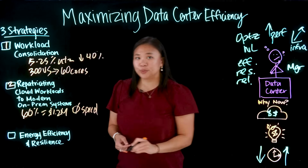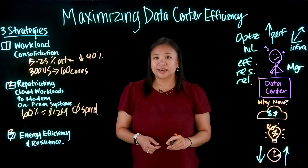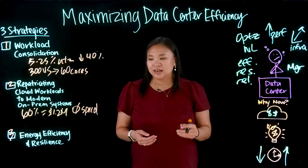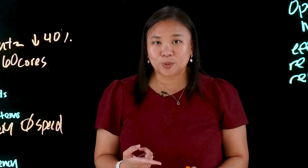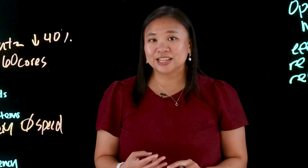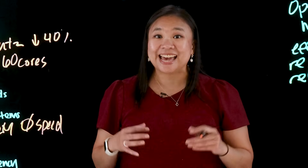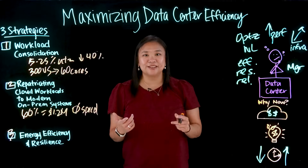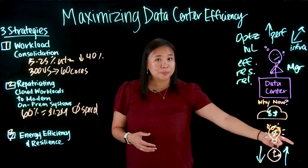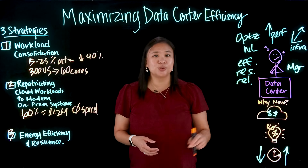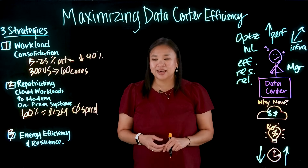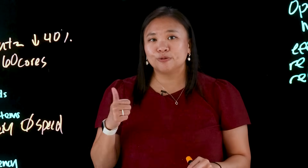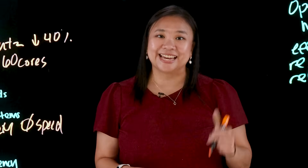The third strategy: energy efficiency and resilience. Modern infrastructure is built for efficiency and uptime. You get maximized compute per watt, rack-level energy monitoring, intelligent workload placement for optimal resource usage, and high availability and automated failover mechanisms. This allows you to scale efficiently, maintain uptime for critical systems, and reduce energy waste even during failures. With automation built in, you reduce human error and unplanned downtime, improving both service reliability and team productivity.